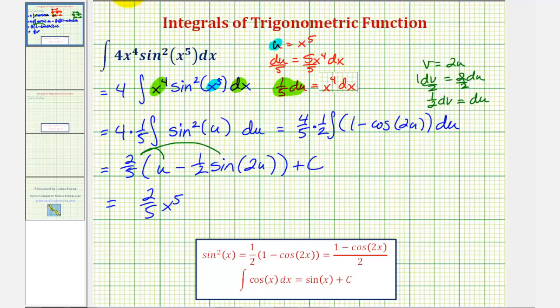we'd have minus two-tenths or one-fifth sine two x to the fifth, and of course plus c. This would be our antiderivative. I hope you found this helpful.